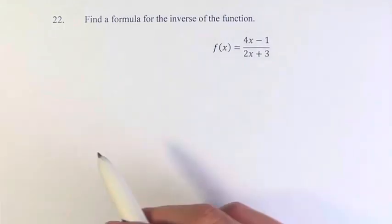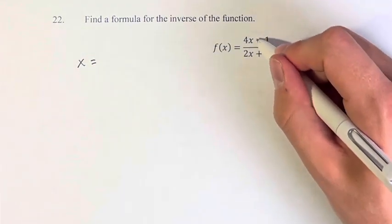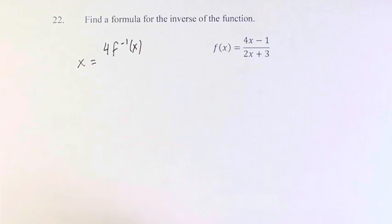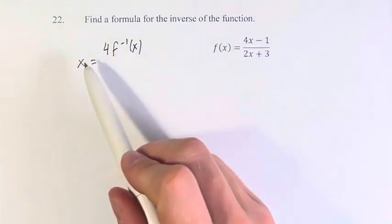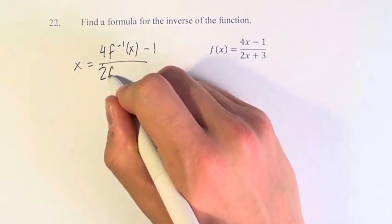So the way that we're going to do this is wherever we see an f(x), we replace it with an x, and wherever we see an x, we replace it with the inverse of f. And by swapping the variable and the function itself, we now have an equation that we can solve for the inverse.